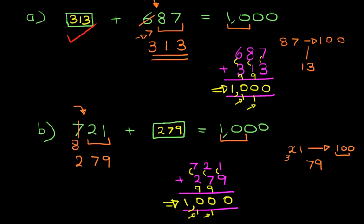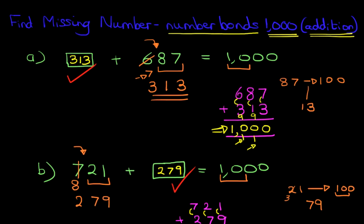So that is a nice quick method to work out number bonds, to find the missing number for number bonds to 1,000 when there are addition questions.